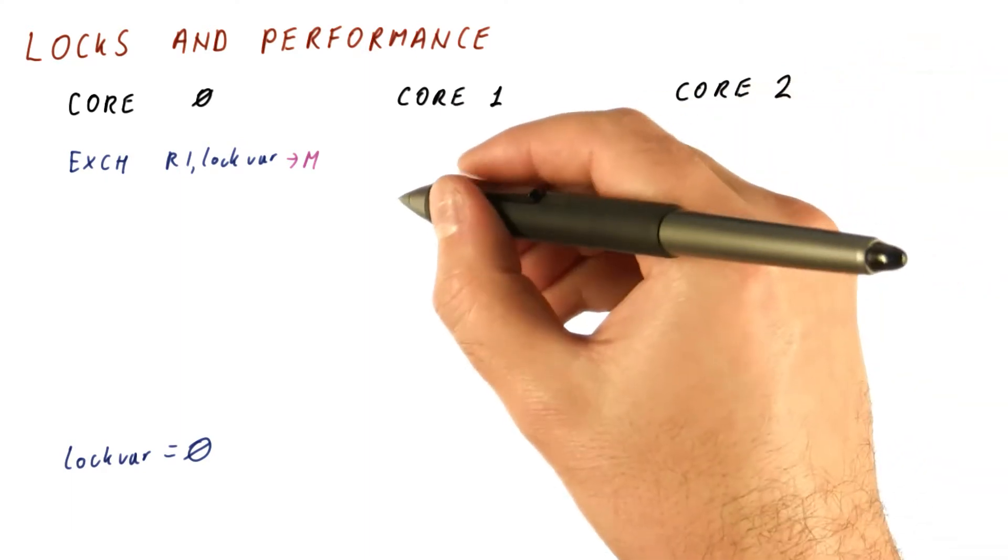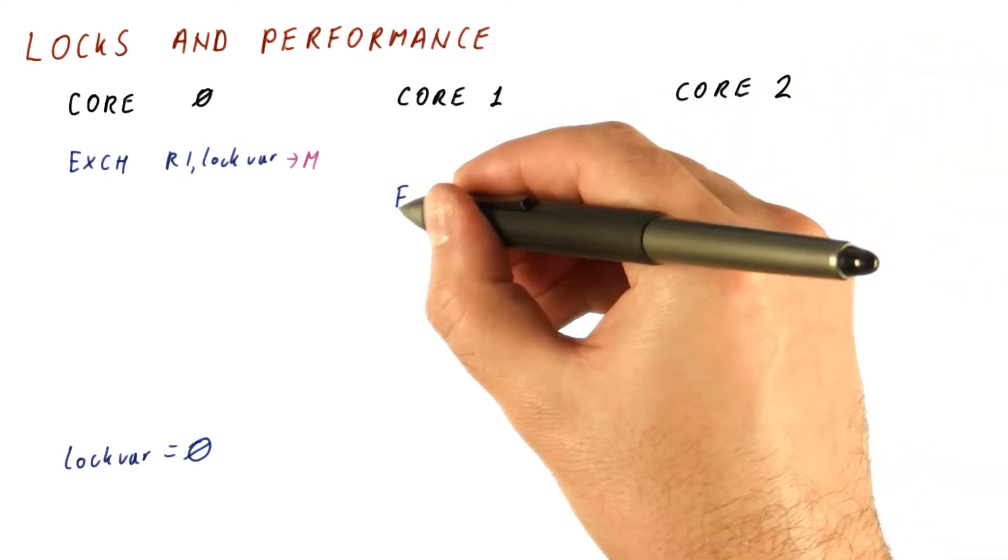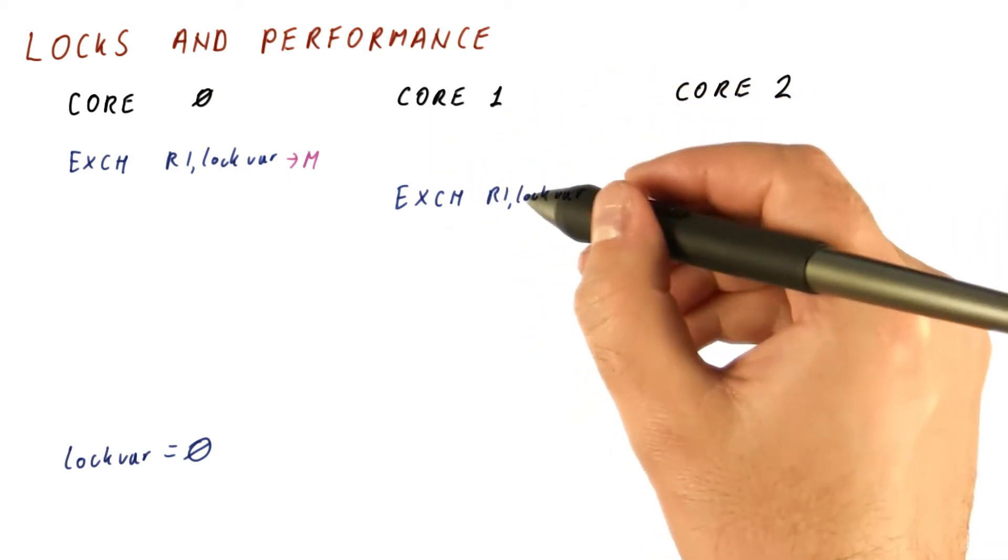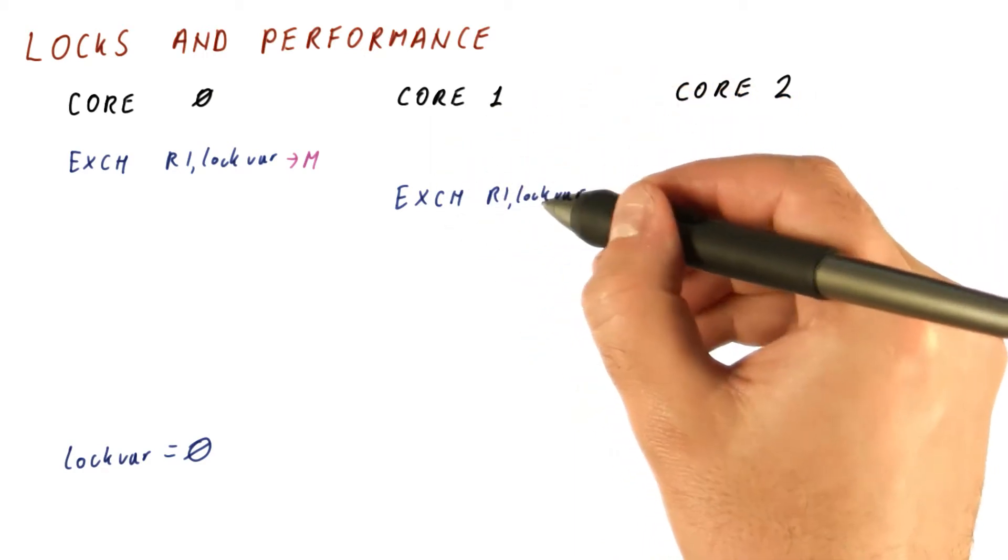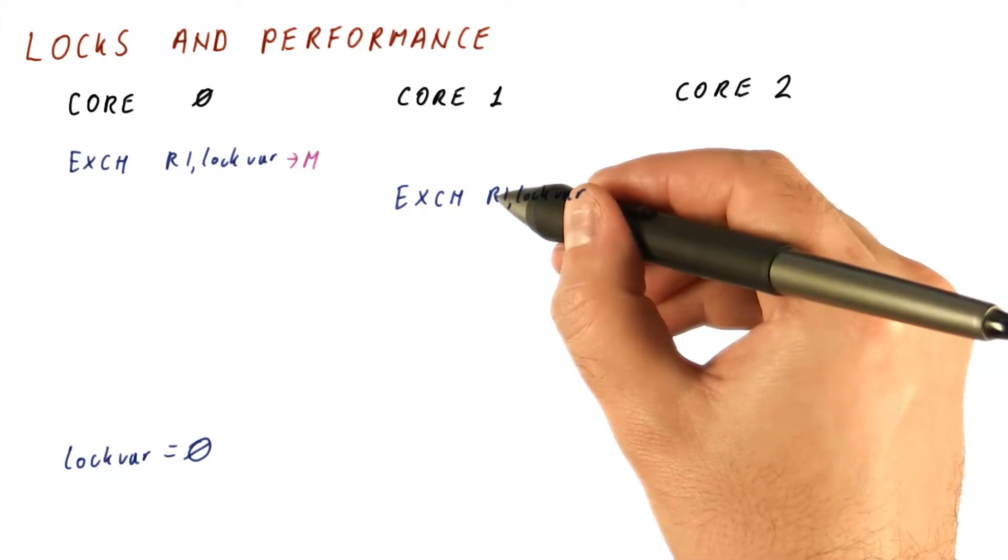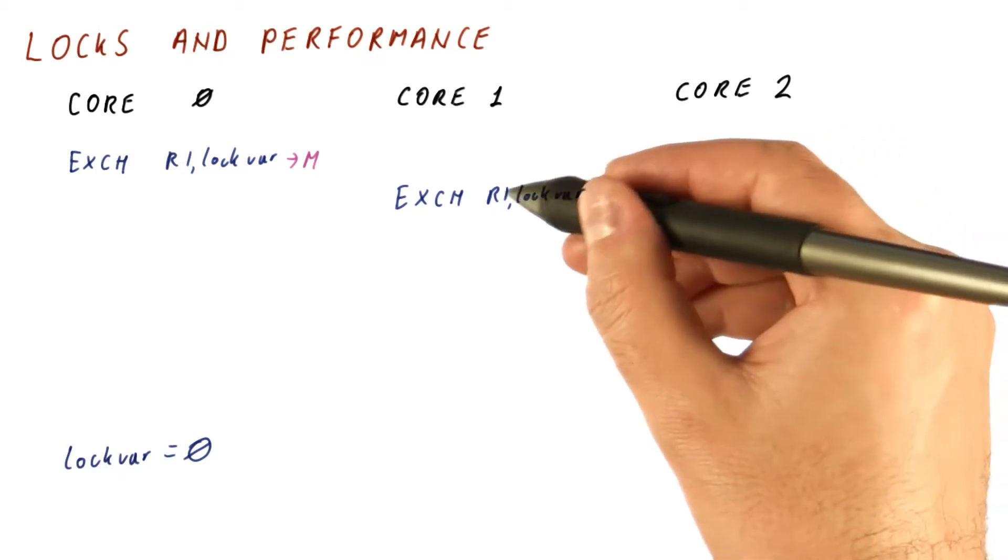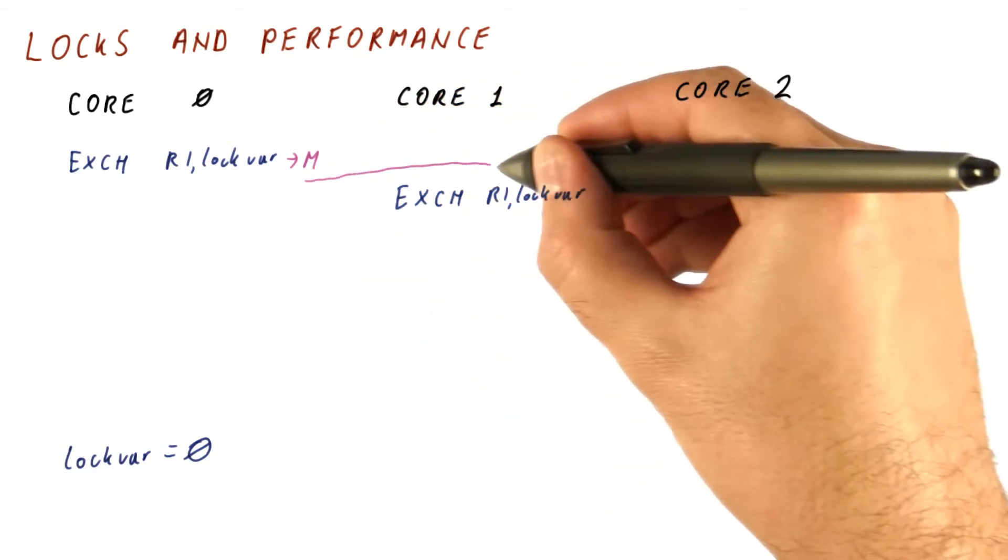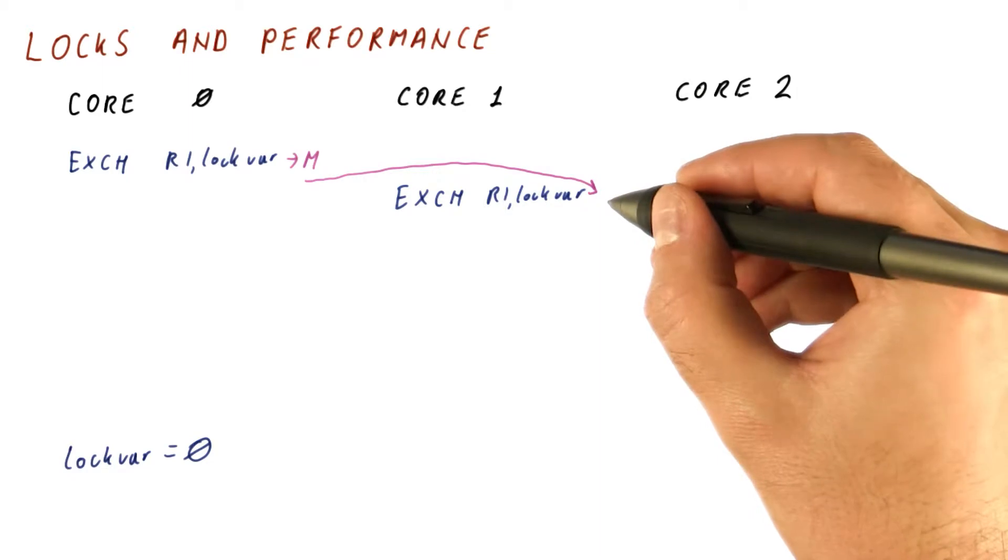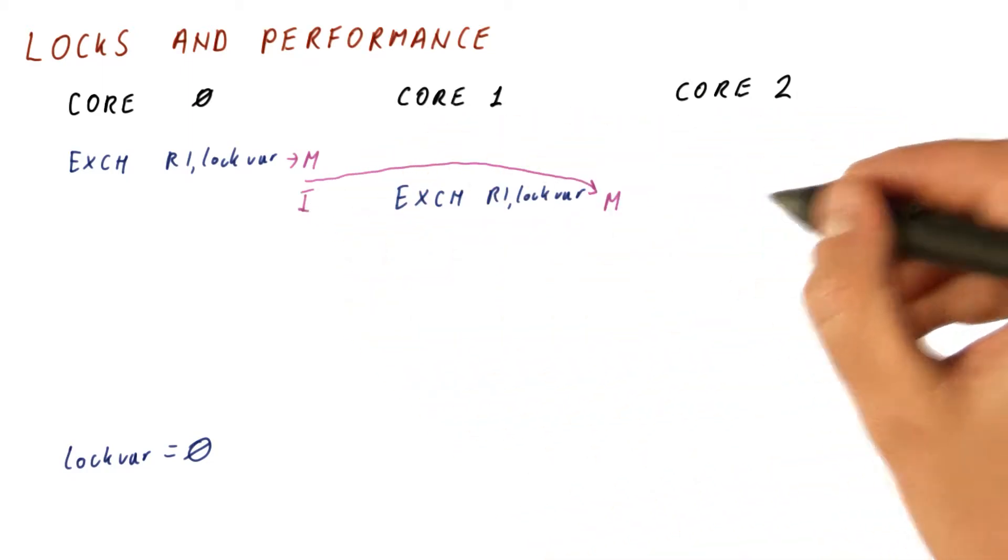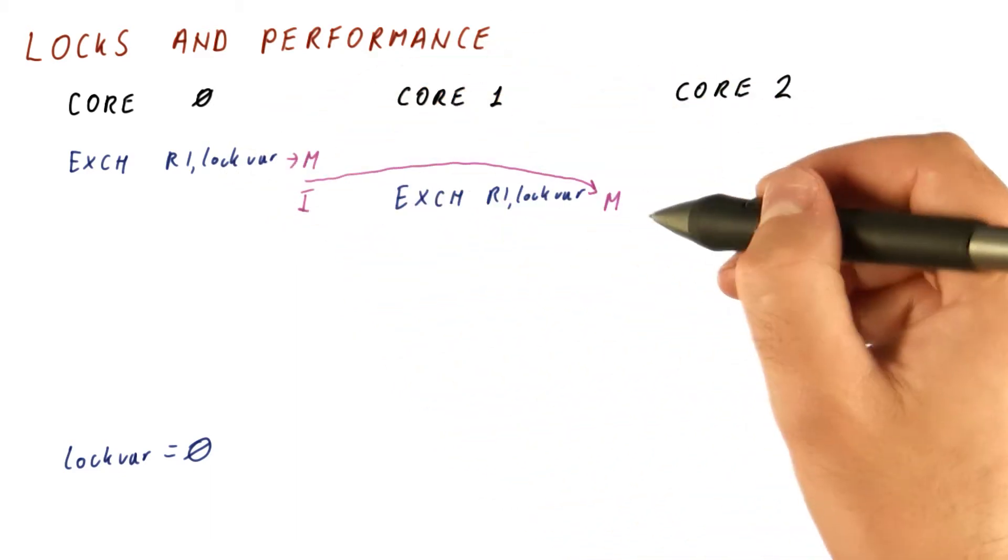Both core one and core two might want to also enter the same critical section. Let's say core one tries first. It does an exchange of R1 and lock var, sees that lock var is one, so it didn't grab the lock. But because there was a write to lock var, there is a transfer of lock var into this cache where it's now modified. And now, lock var is invalid in core zero's cache.